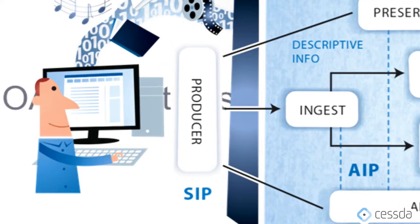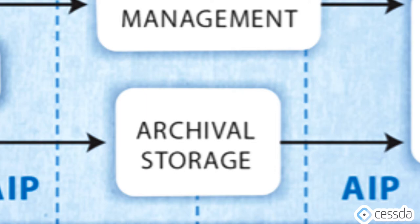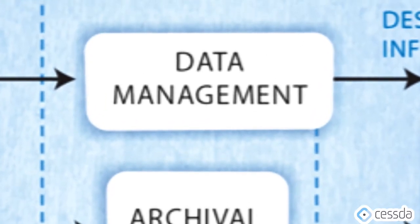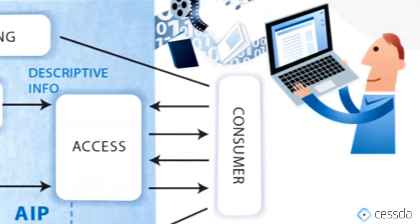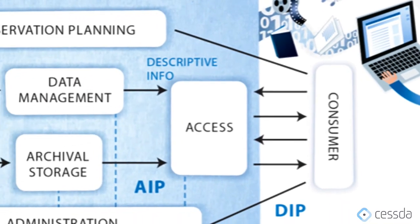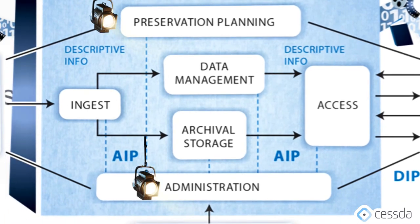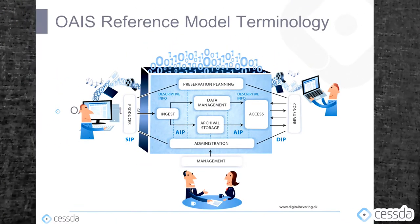Step three, store data safely, is referred to as archival storage in the OAIS model — this is where data is permanently kept and stored securely. Step four, make data findable, is called data management in OAIS — this is where metadata are stored and managed so that data can be found. Step five, make the data accessible for reuse, is referred to as access in the OAIS model, which ensures that users can send queries to the archive and receive data in response. Step six, keep the data usable — in the OAIS model these responsibilities are fulfilled by preservation planning and administration, which monitor the technical environment and the user community and plan and implement any measures necessary to mitigate the risk of change.